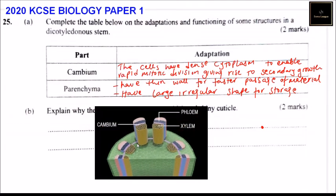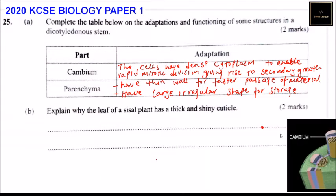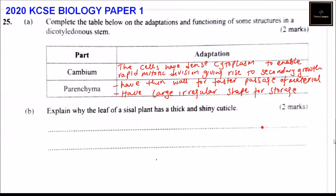We can have a look at the picture showing the cambium in between the xylem and phloem. So it facilitates the increase in size of the plant.